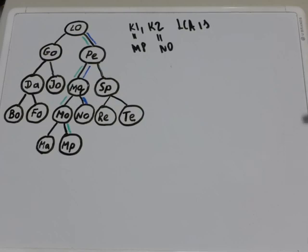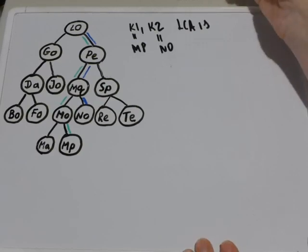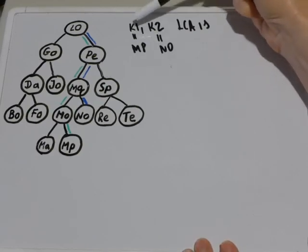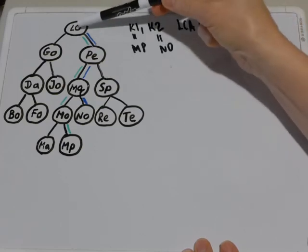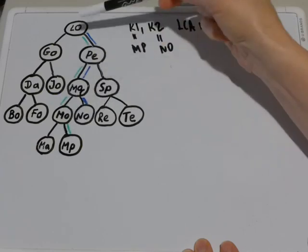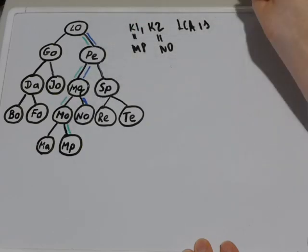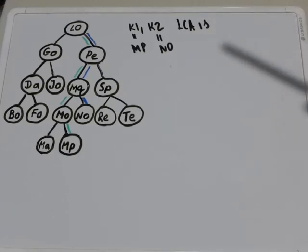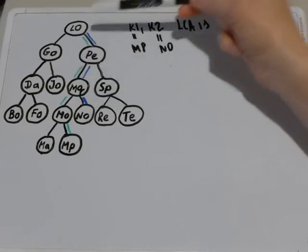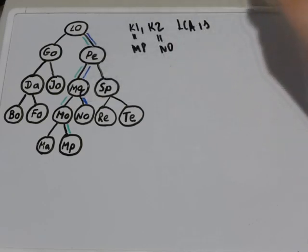Let me just recap what is the lowest common ancestor. If we are given two keys MP and NO, for example, then there is a path from the root to MP. This path is shown here with green edges and the path from the root to NO is shown with blue edges.